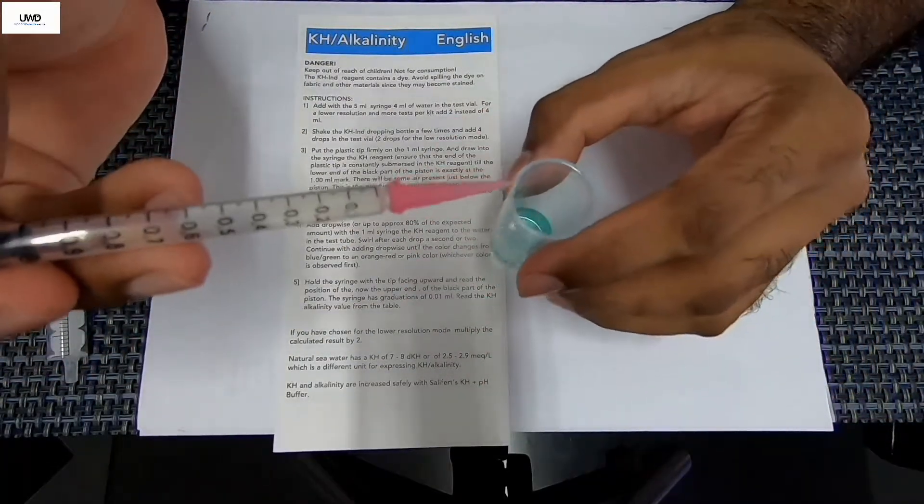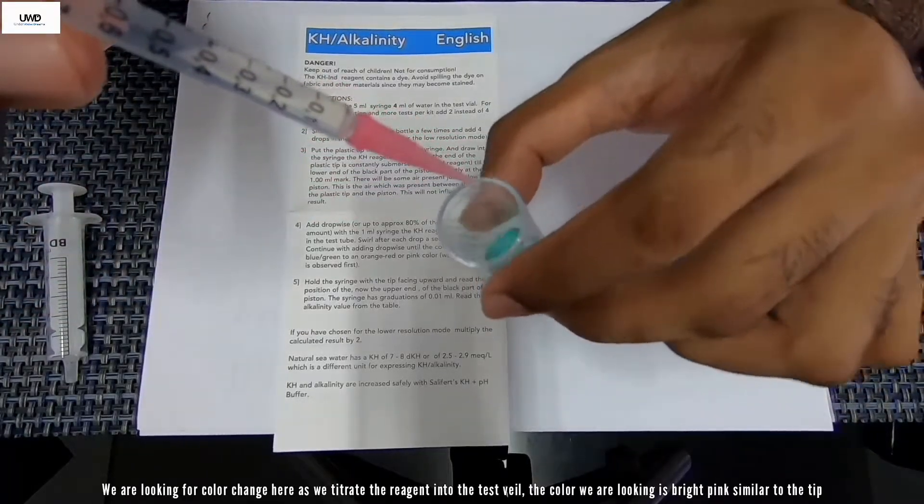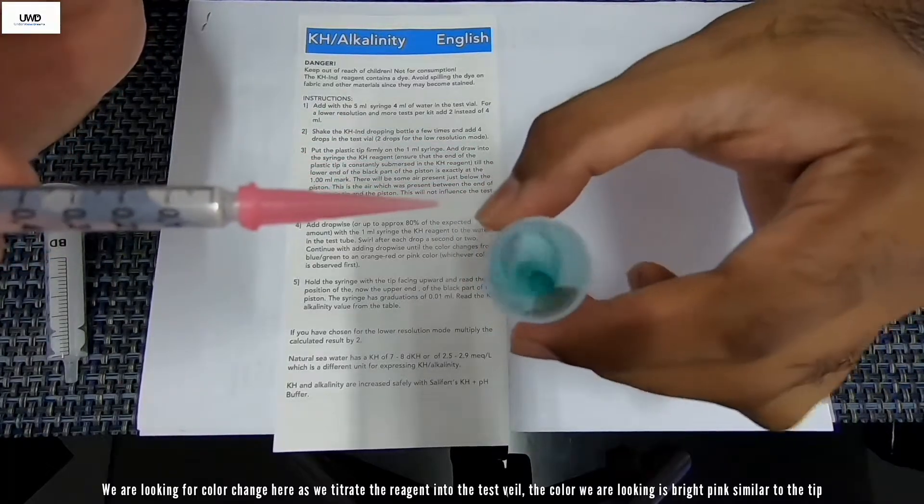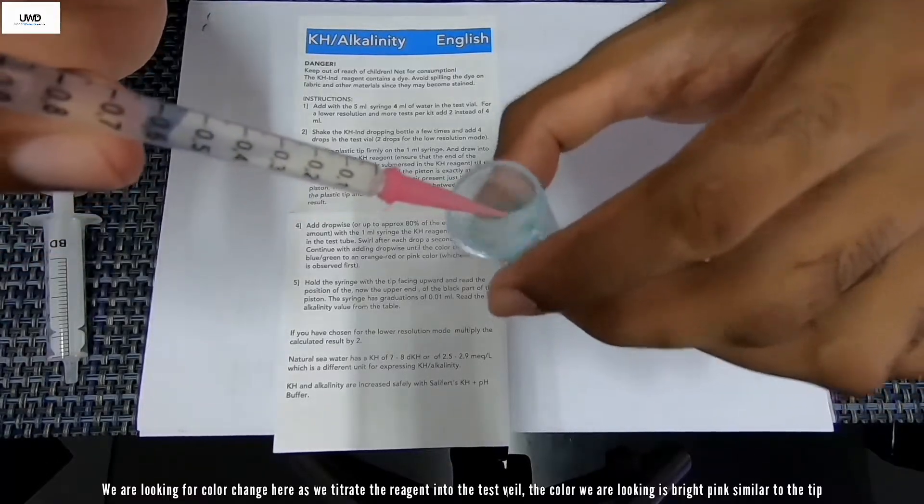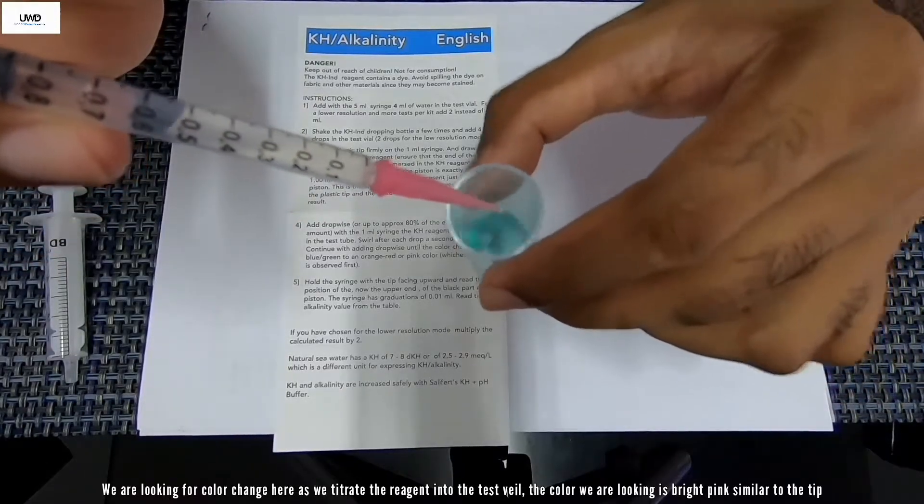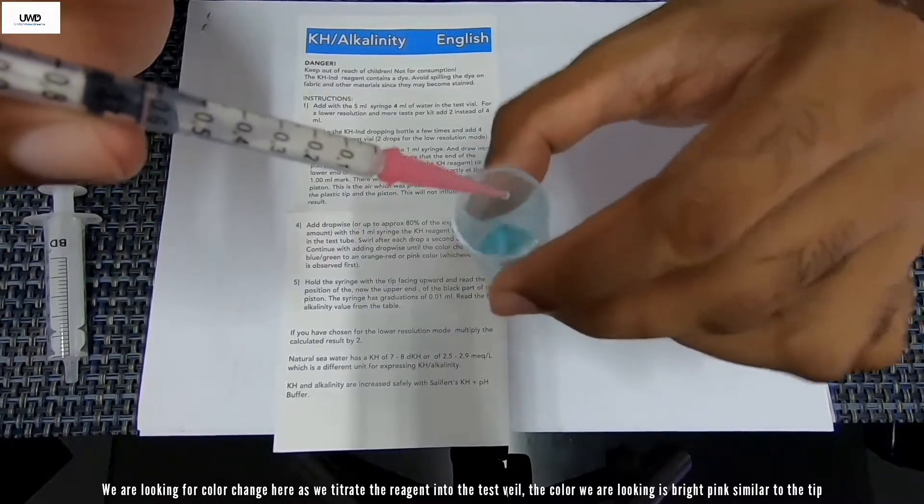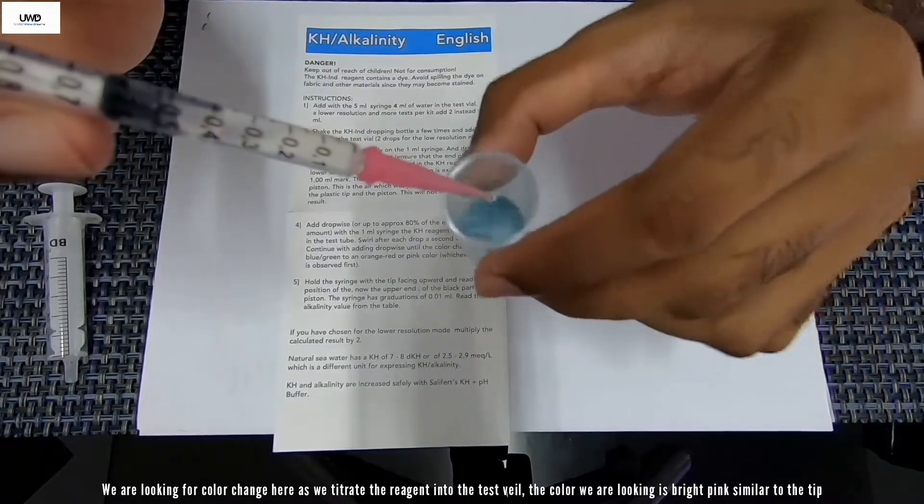We're going to be drawing all this liquid onto this test vial here until the color of this test vial turns to pink, bright pink. While doing this is what we call a titration method. While doing it, make sure you give it a little shake like this, always mixing it up. You can put little by little or a bit faster if you know your level earlier.